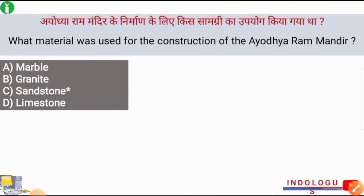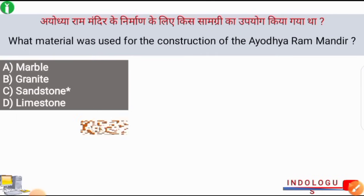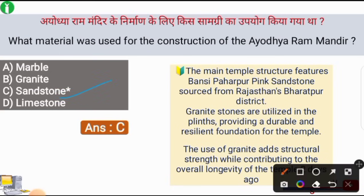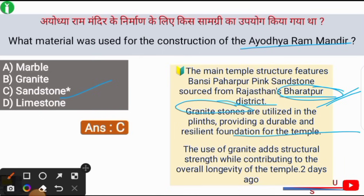What material was used for the construction of Ayodhya Ram Mandir? The correct answer is option number C. The main temple structure features Bunsi Paharpur pink sandstone, sourced from Rajasthan's Bharatpur district. Granite stones are utilized in the plinths, providing a durable and resilient foundation for the temple. The use of granite adds structural strength while contributing to the overall longevity of the temple.